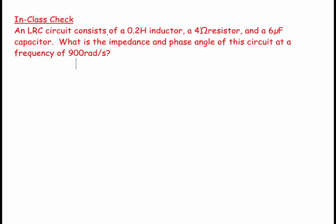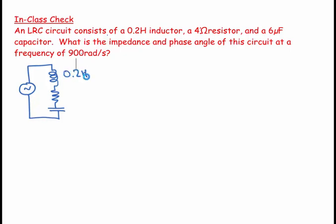This question involves an LRC circuit with a power supply, an inductor, a resistor, and a capacitor. The inductor is 0.2 H, the resistor is 4 ohms, and the capacitor is 6 microfarads. The power supply operates at 900 radians per second.